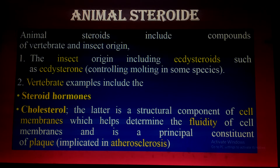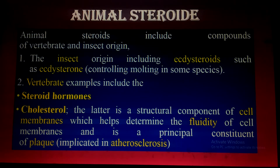Regarding animal steroids, I want to share something new — insect-origin steroids called ecdysteroids. The word 'ecdysteroid' is derived from 'ecdysis,' the process by which invertebrates and arthropods shed their skin. Insects undergo ecdysis during their metamorphosis stages, and ecdysteroids such as ecdysterone control and help in the molting process in some species.